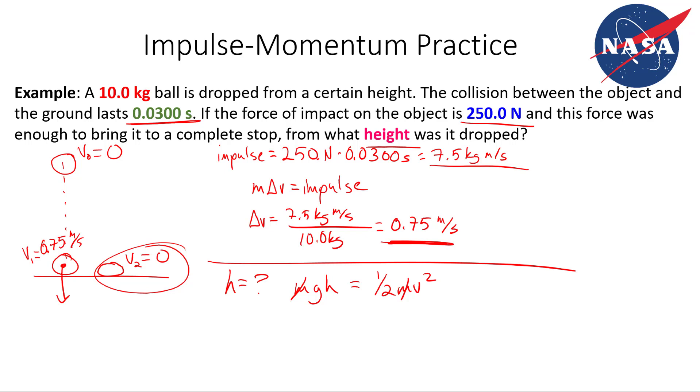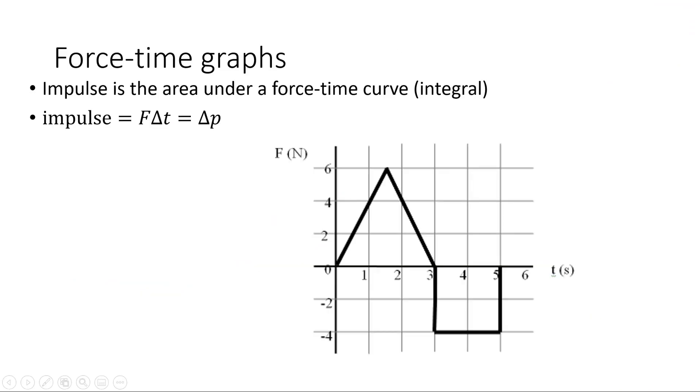If we want to solve for the height, we get H equals 0.5 V squared over G, where V is our final velocity. So 0.5 times 0.75 meters per second all squared, over 9.81 meters per second squared. 0.5 times 0.75 squared divided by 9.81. So the height was only 0.0287 meters, or 2.87 centimeters. Not dropped from very high.